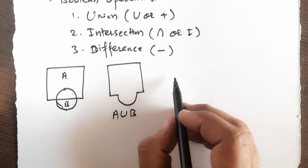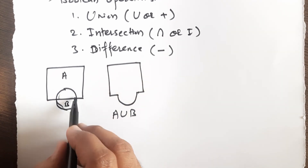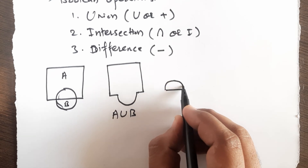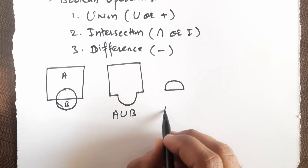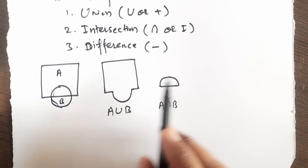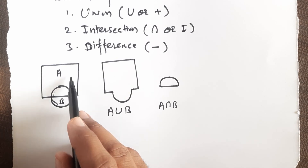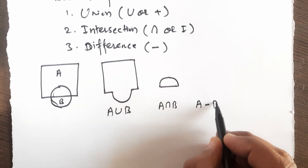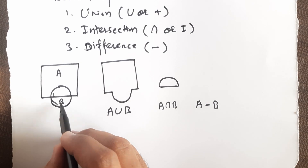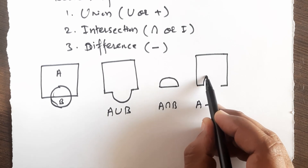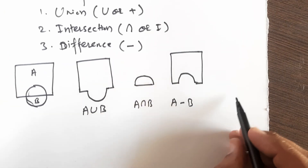If you apply Intersection, only the common part of A and B will remain; everything else is removed. So A intersection B gives you just the overlapping region. If you apply Difference and subtract B from A — that is, A minus B — the portion of B that overlaps with A is removed, and the remaining part of A is your result.